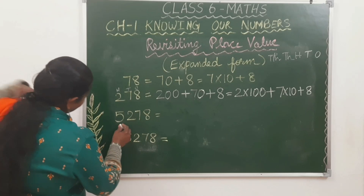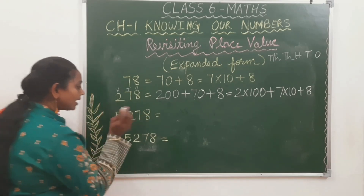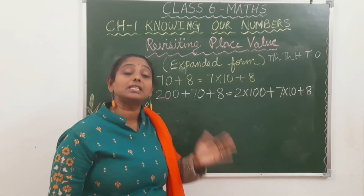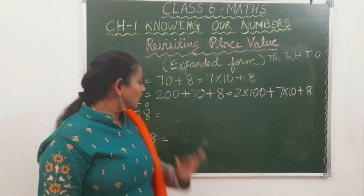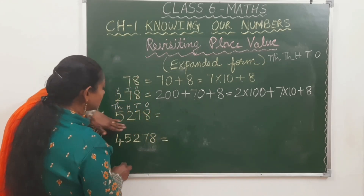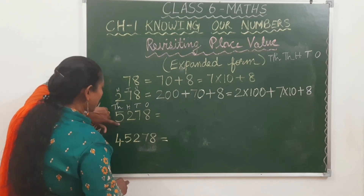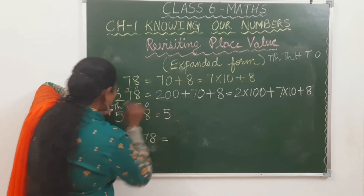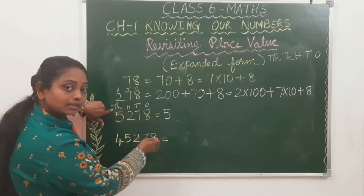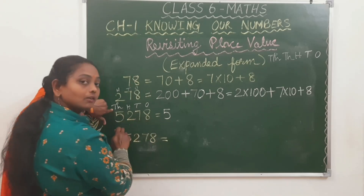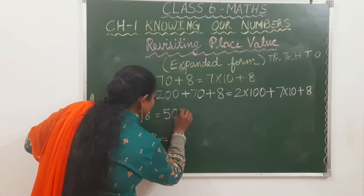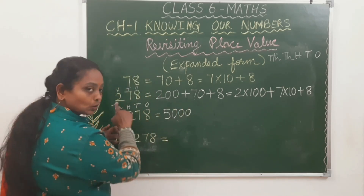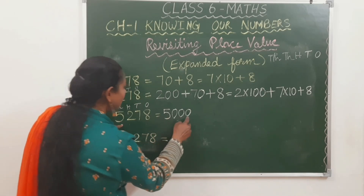Next, let's expand 5,278. First write the place values: 1s, 10s, 100s, 1,000s. Then you'll know how many zeros to write. 5 is in the thousands place — write 5 and then 3 zeros, giving 5,000. Plus: 2 is in the hundreds place — write 2 and then 2 zeros, giving 200. 7 is in the tens place — write 7 and then 1 zero, giving 70. 8 is in the ones place — write 8 as it is.